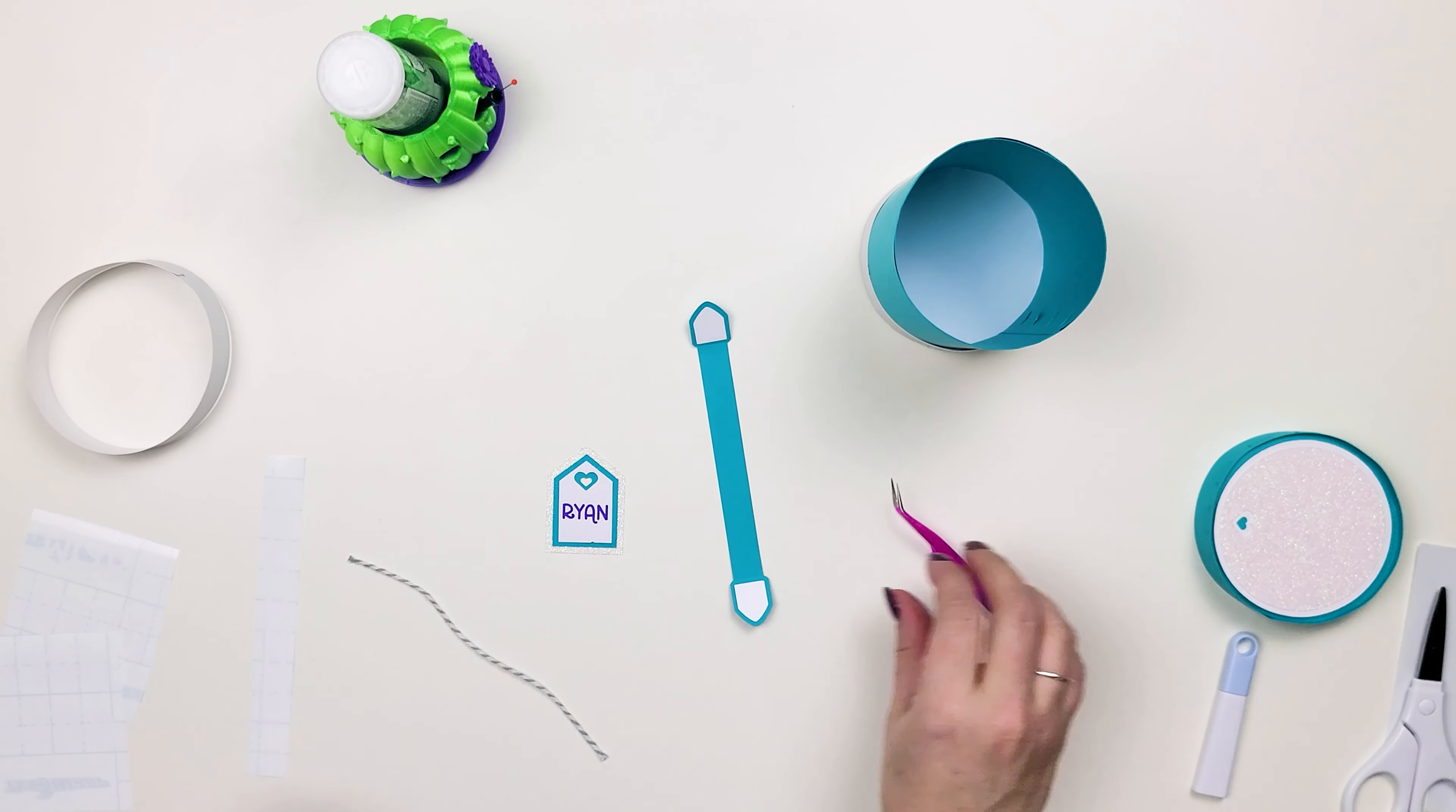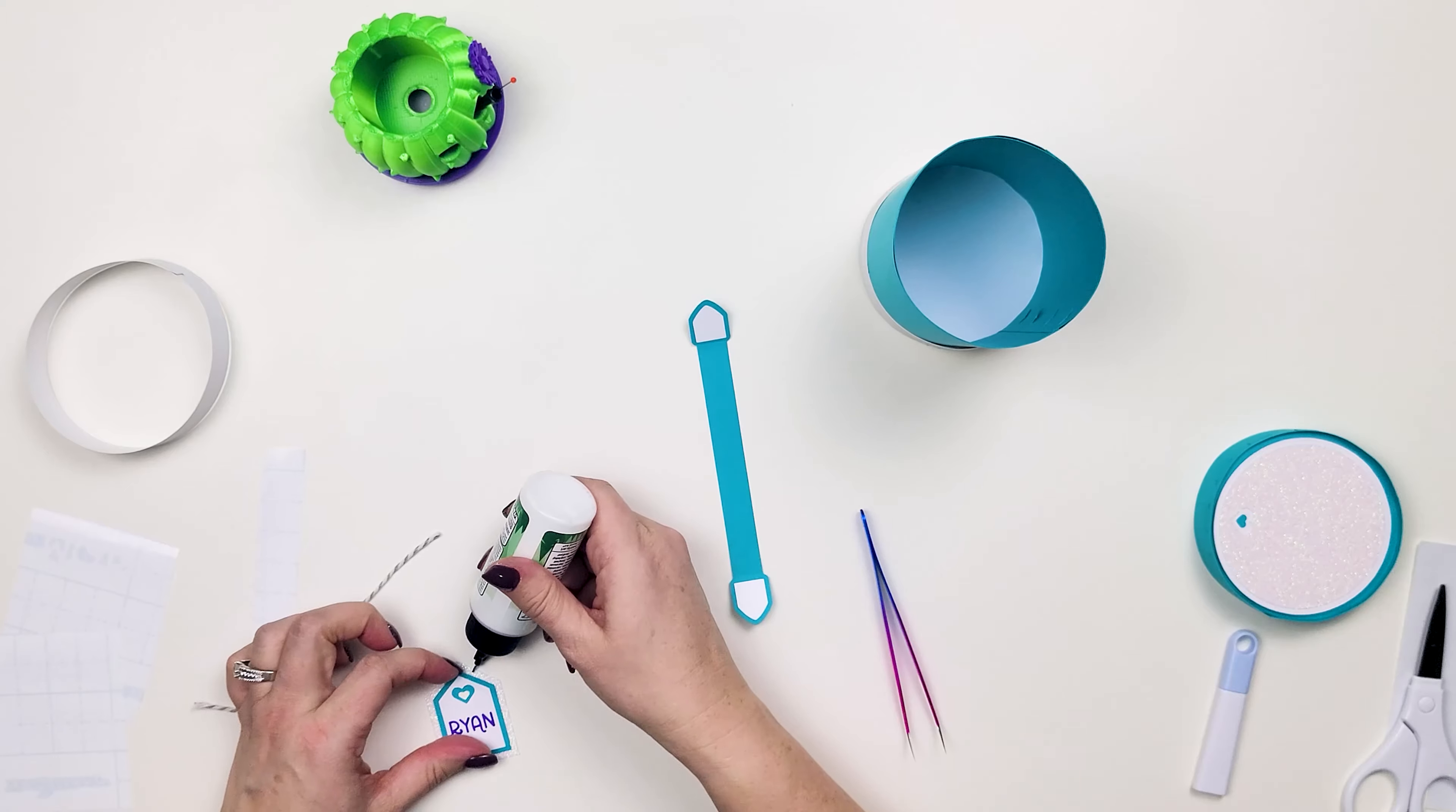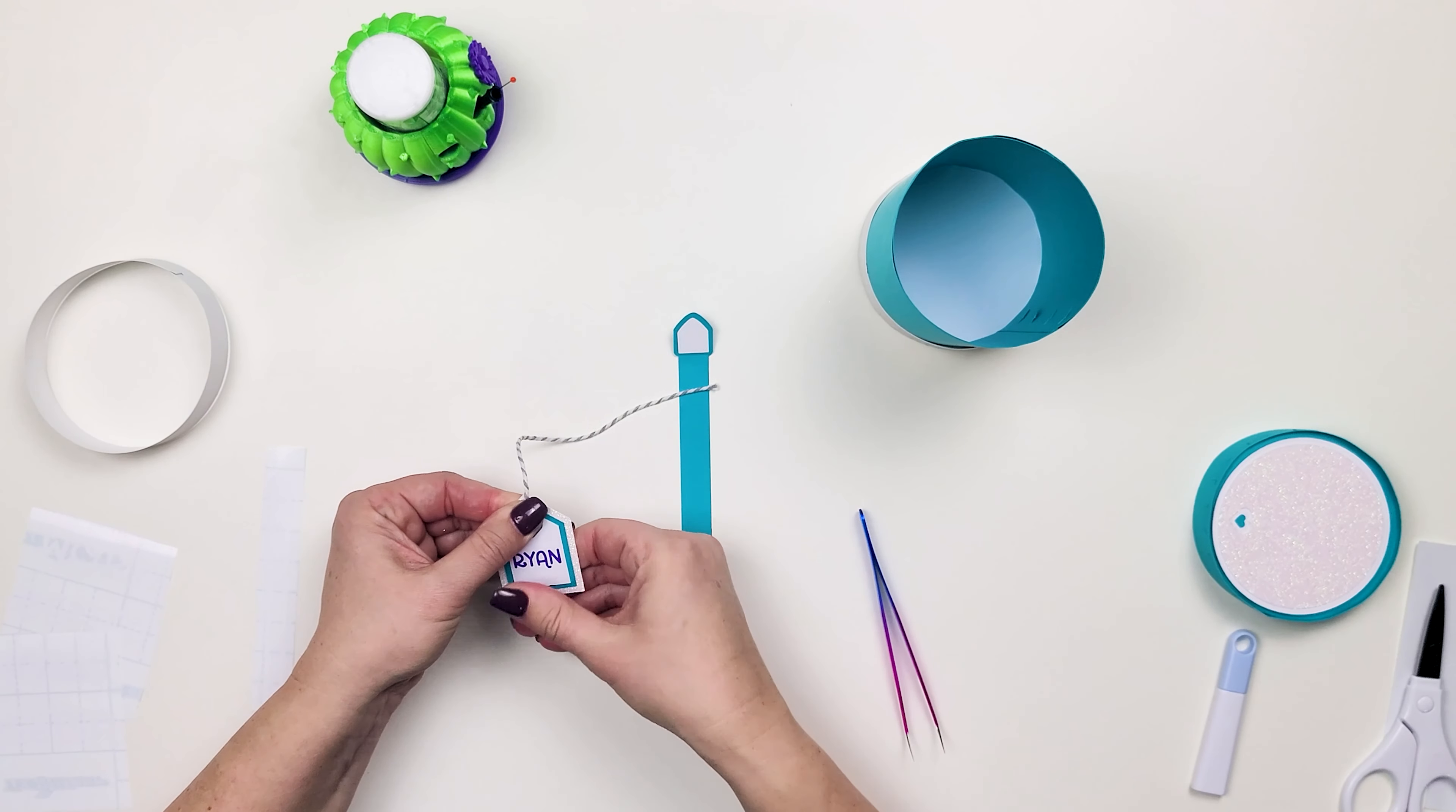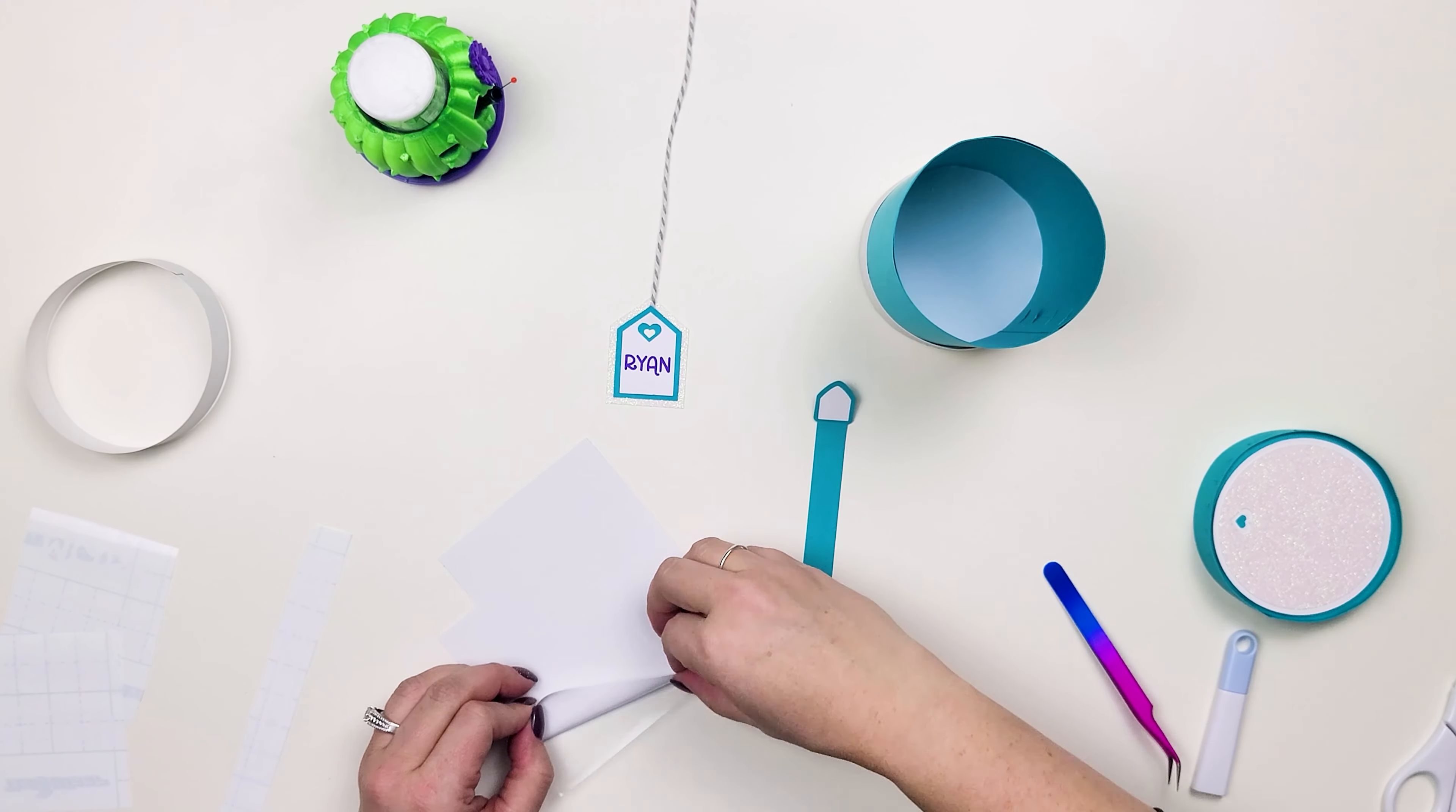Okay now I have got my string I am going to use for hanging off the side of the cup. I am going to glue it on the inside of this tag so that it is hidden from view. Okay now I am going to finish the handle. I have one more piece to put on.